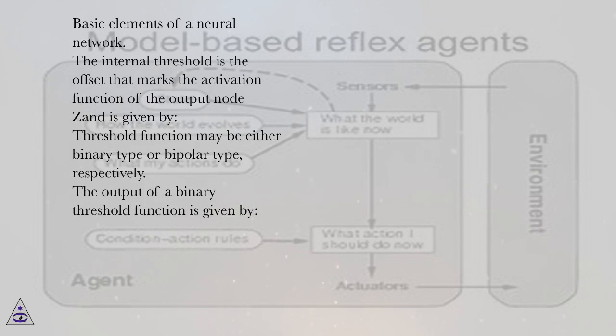The internal threshold is the offset that marks the activation function of the output node z and is given by. Threshold function may be either binary type or bipolar type, respectively. The output of a binary threshold function is given by.